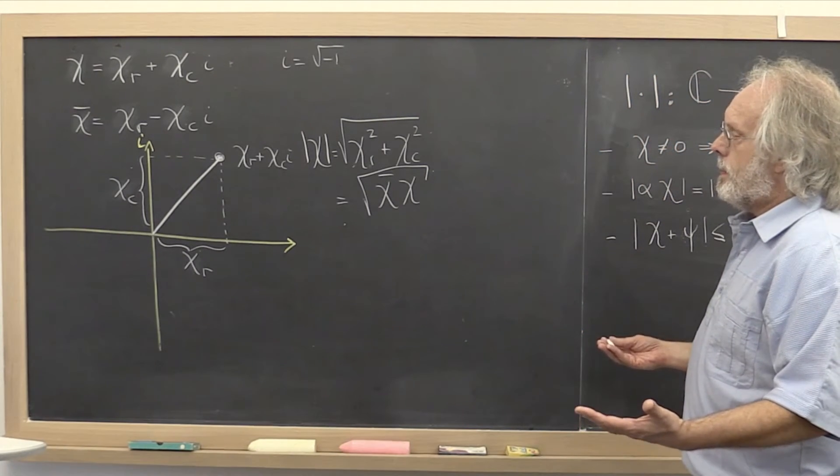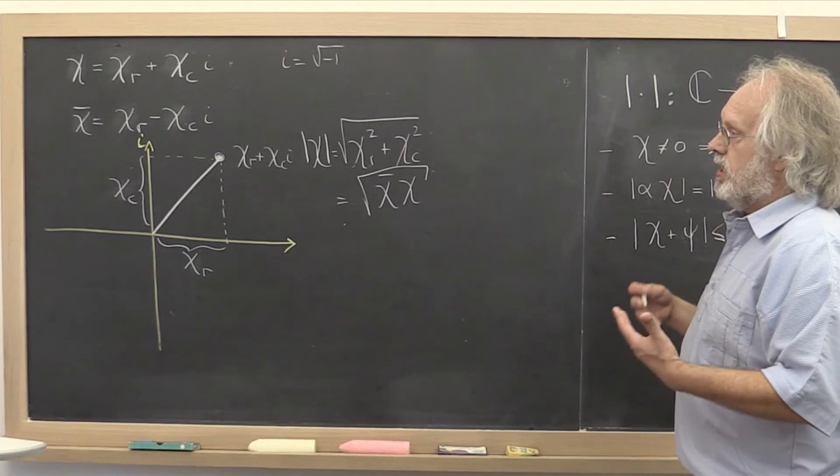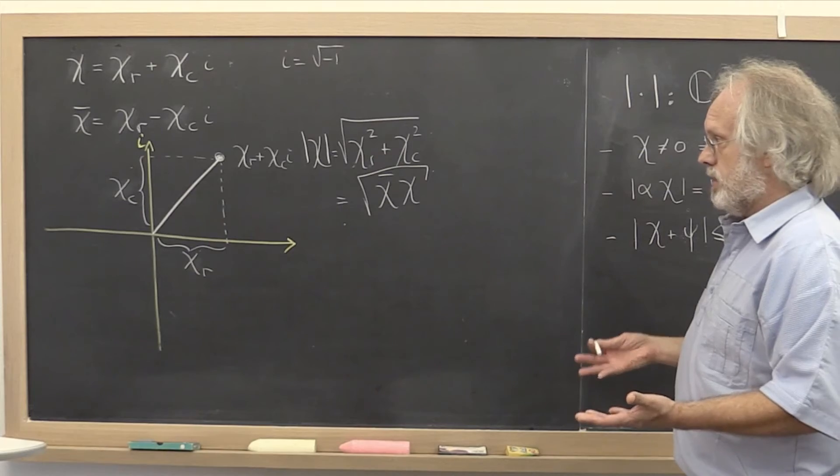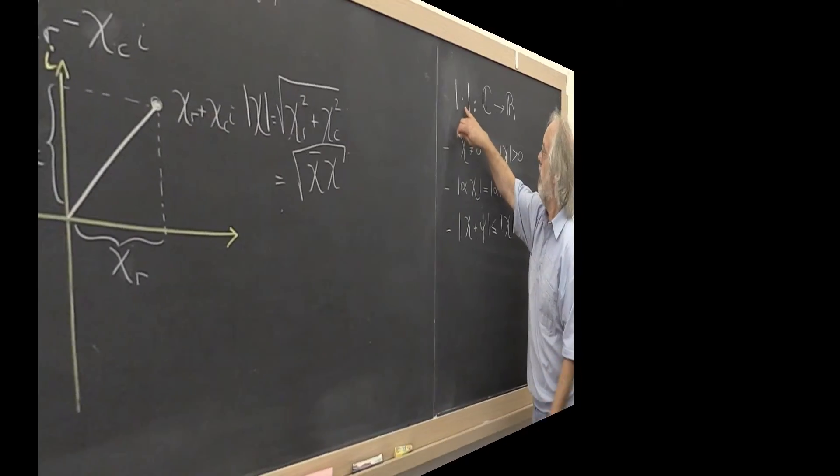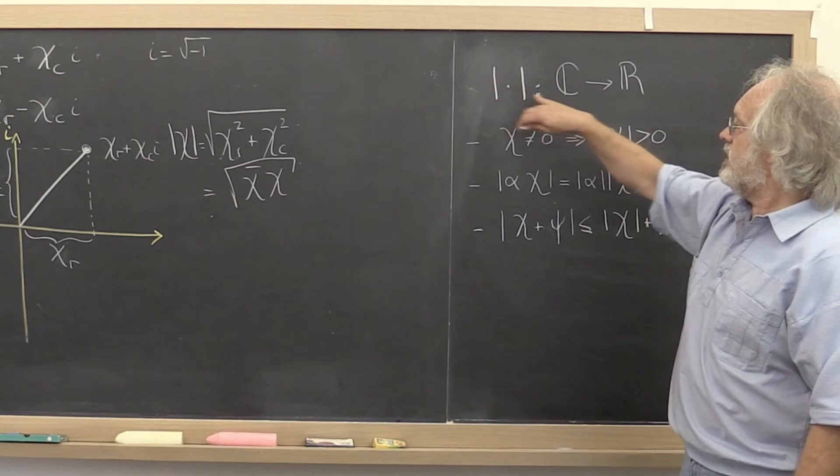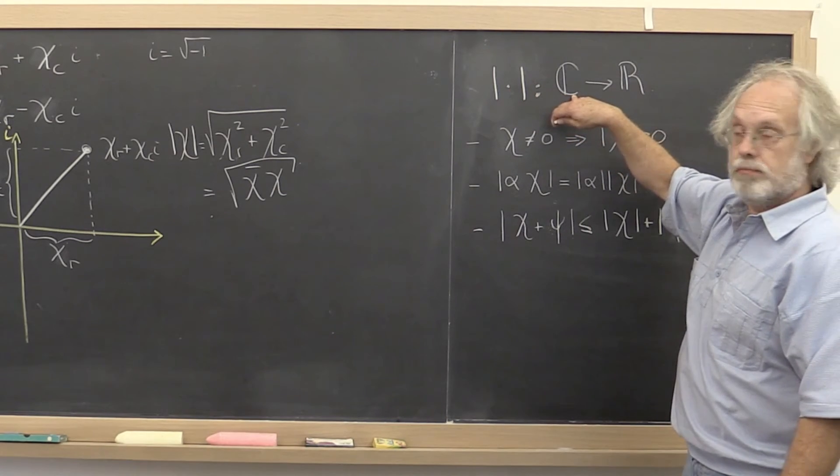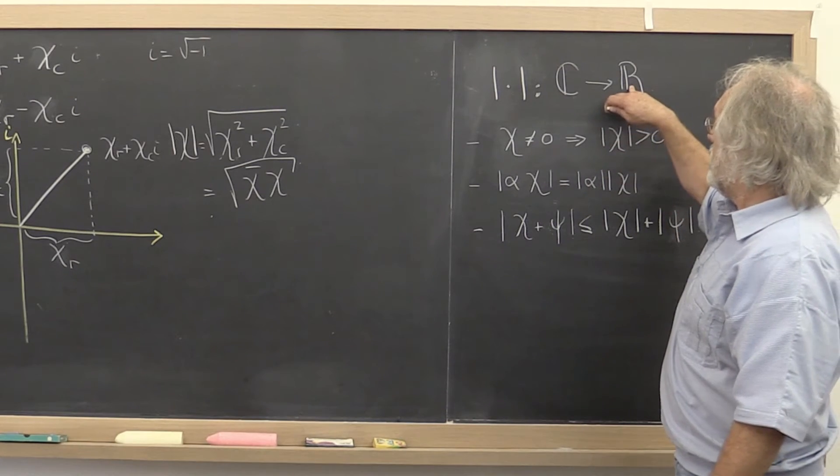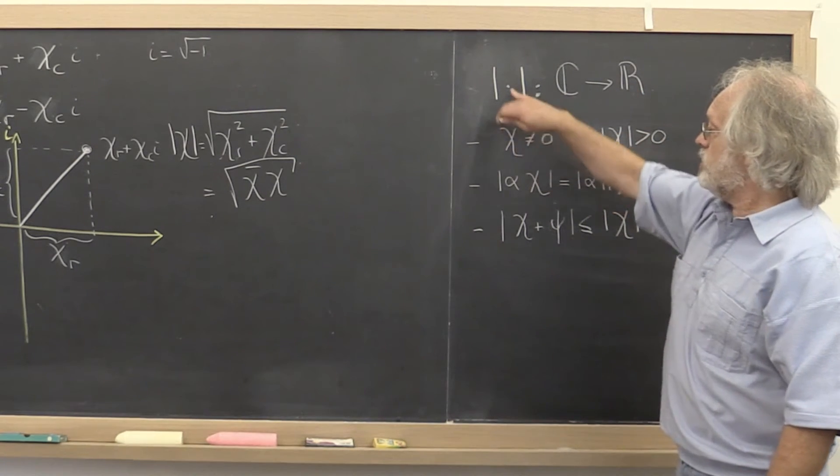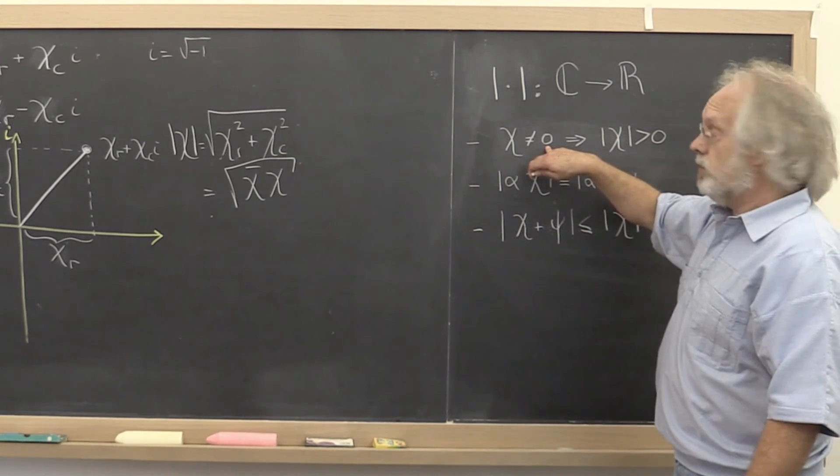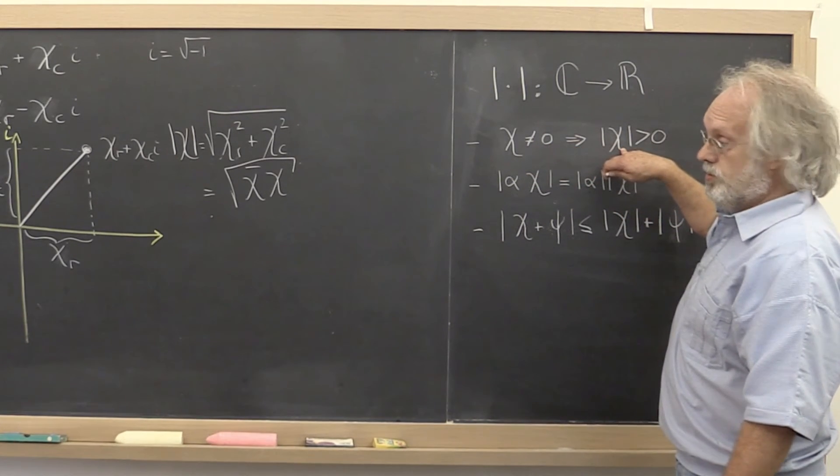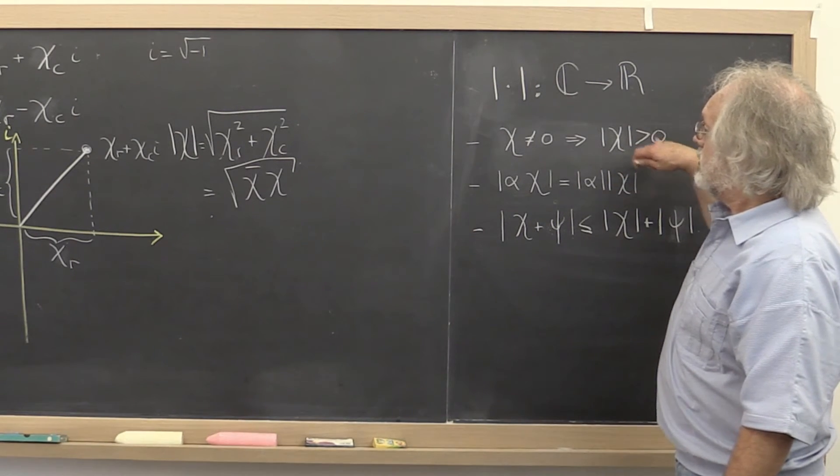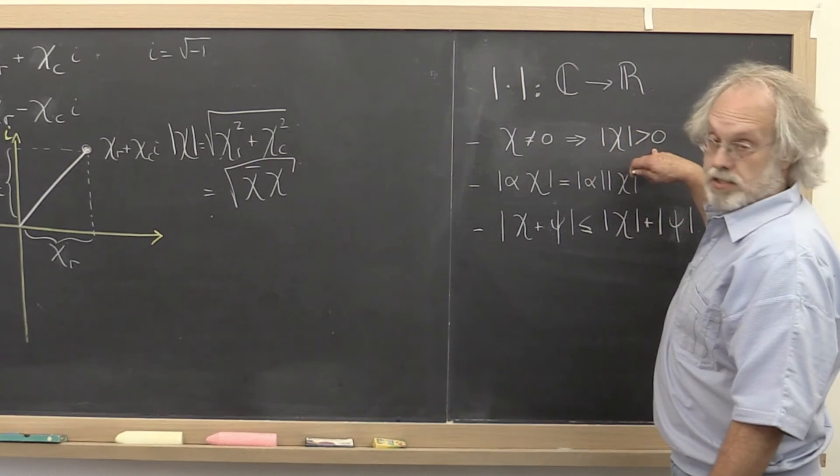Now, the absolute value is a simple example of a norm. What kind of properties does the absolute value have? Well, think of it as a function that takes as input a complex number, and out pops a real number. And what do we know about that real number? Well, as long as what you put in is not the number zero, then its distance to zero is greater than zero. That's known as the norm is positive definite.